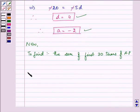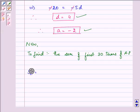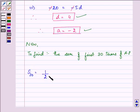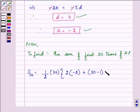So, we can find the sum, that is S_N where N is 30, equal to 1 by 2 into N, that is 30, into 2A that is 2 into minus 2 plus N that is 30 minus 1 into D.